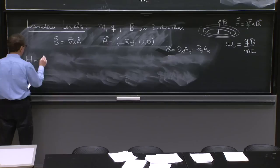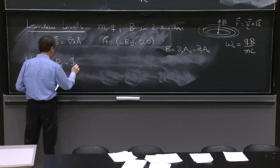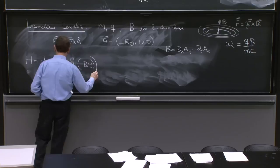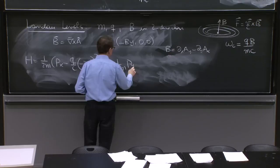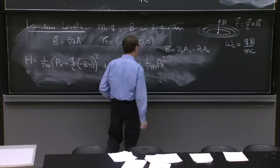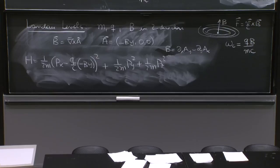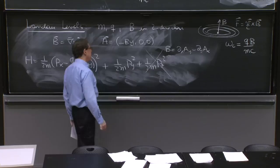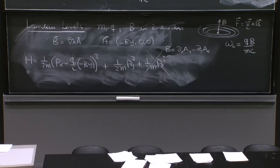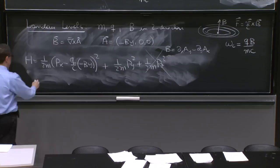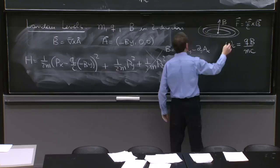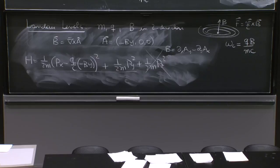So what happens to your Hamiltonian? Your Hamiltonian is now 1 over 2m px minus q over c times ax squared plus 1 over 2m py squared plus 1 over 2m pz squared. I will not consider z motion. It's too simple. It's not too interesting. It's just motion plane waves in the z direction. It's not interesting. All the physics is really happening in the plane. It's the idea that we can constrain ourselves to have orbits of electrons that go like this in circles.